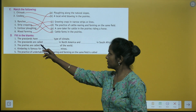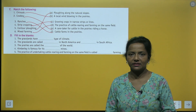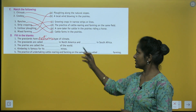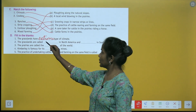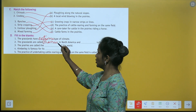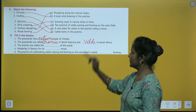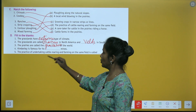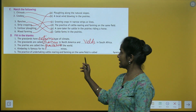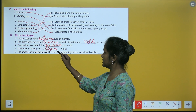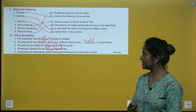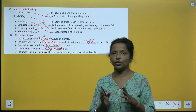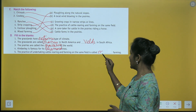Fill in the blanks: the grasslands have extreme type of climate. The grasslands are called prairies in North America and velds in South Africa. The prairies are called the granaries of the world. Kimberley is famous for its diamond mines. The practice of undertaking cattle rearing and farming on the same field is called mixed farming.